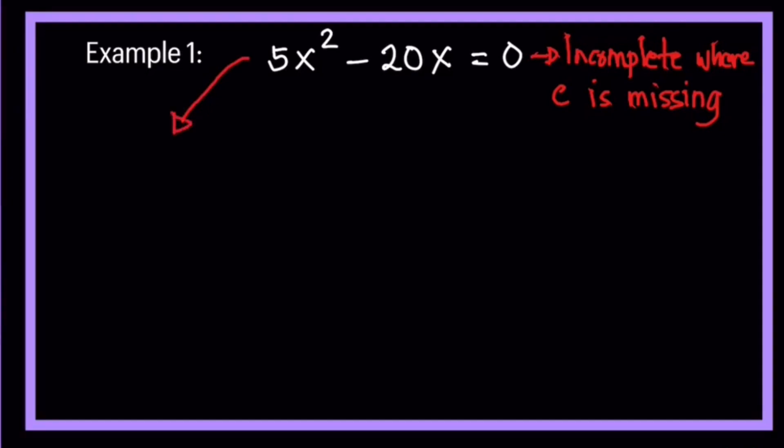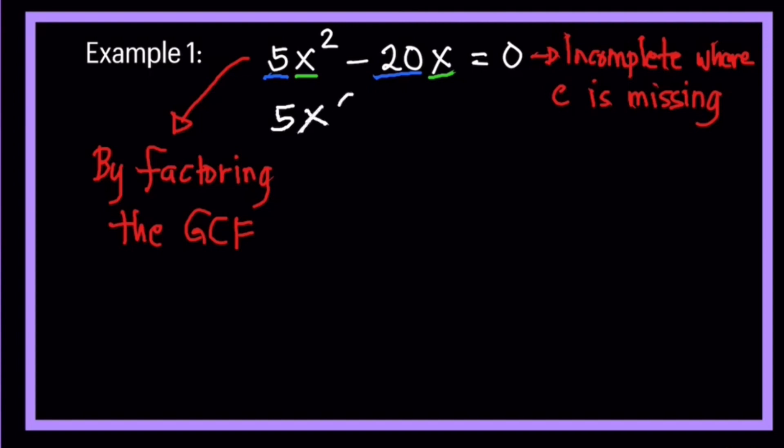Very simple. We are just going to apply factoring here by factoring, finding out the greatest common factor in each of the terms here, the GCF. First, look at the numerical coefficient. The numerical coefficients here, we have 5 and 20. What do you think is the greatest common factor? So 5 and 20, mentally you can work it out. 5 is common because 5 is also common to 20, which is 4 times 5. And then we have here the variables, which is x squared and x. The common is x.